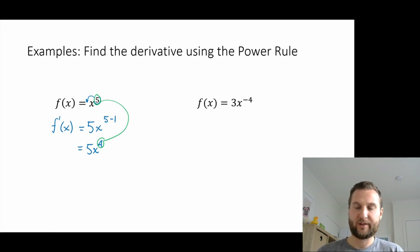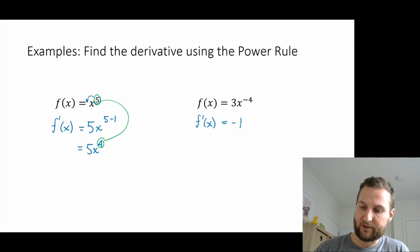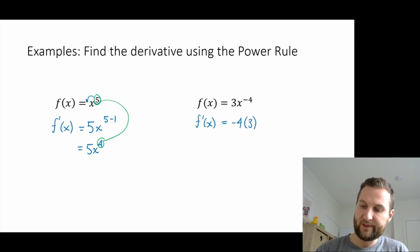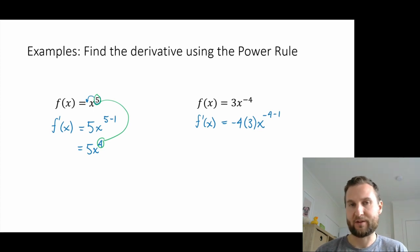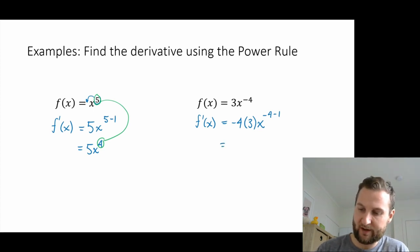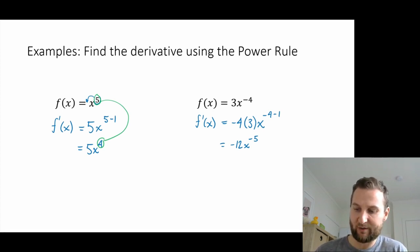The power rule also works with negative exponents. For f(x) equals 3x to the minus 4, f prime(x) equals negative 4 times 3 times x to the minus 4 minus 1. Simplifying, that's minus 12x to the power minus 5. Again, the degree of the equation has diminished by one.